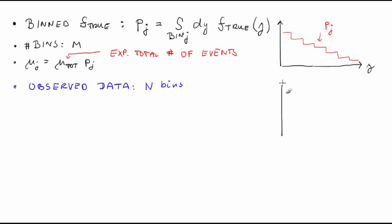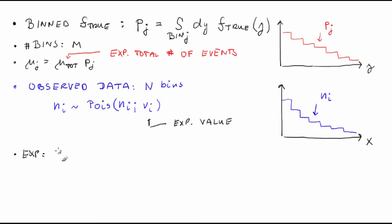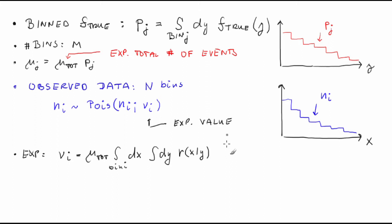The observed data is a histogram with n bins. n can be different from the number of true bins m. In each bin of the observed histogram, there are n_i events. Typically, n_i is distributed according to a Poisson distribution with mean value ν_i. We will use the symbol ν_i to denote the expectation value of n_i regardless of what the distribution is. For now, let's just assume we know the pdf for the observed histogram. Let's express the expectation values ν_i in terms of the true quantities: ν_i = μ_tot × ∫_{bin i} dx ∫ dy R(x|y) f_true(y).